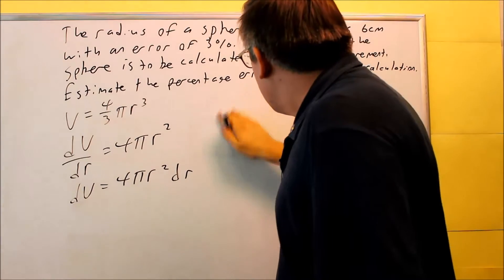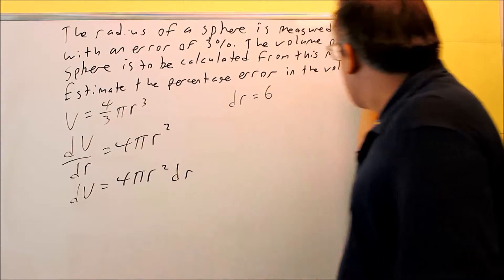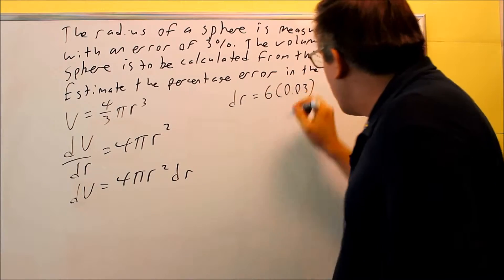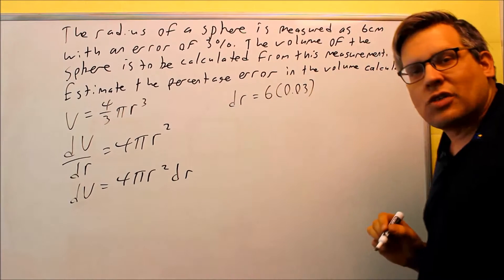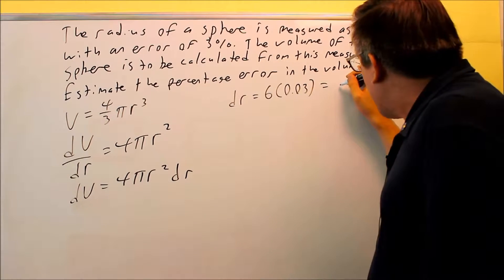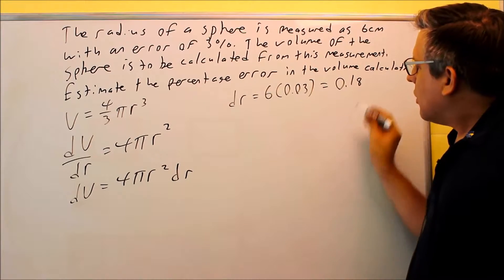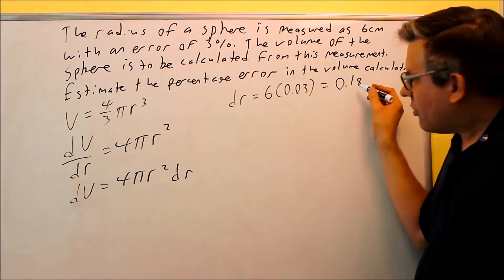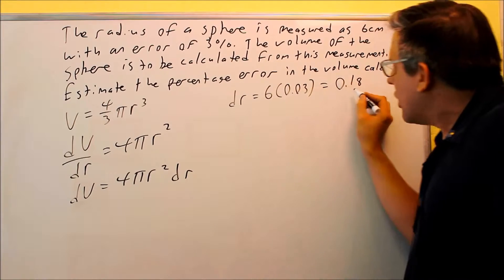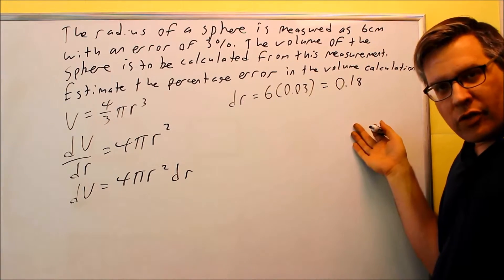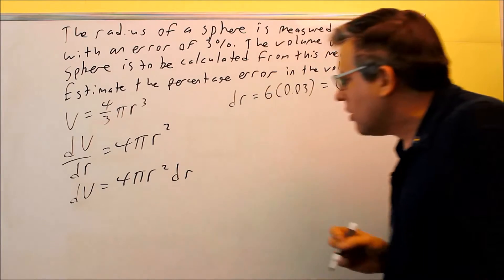Well, dr is, we're going to take basically the original 6 centimeters we have and multiply it by 0.03, which would be 3% as a decimal. If we multiply that out, that means we'll get 0.18, so 0.18 centimeters. That's going to be our difference in the radius with the error that we have. That's why we've got to do the derivative here because we need to know that dr.